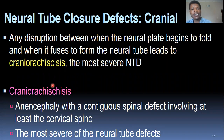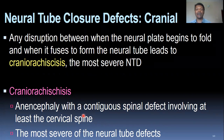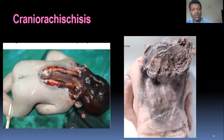Furthermore, we have cranial rachischisis — another defect that extends down into the cervical spine. It looks like anencephaly, but in this case the failure of closure extends down into the cervical spine, around the neck. Here's a picture of that.